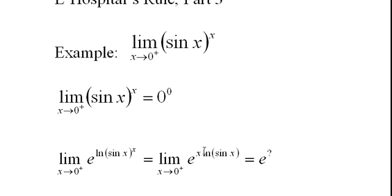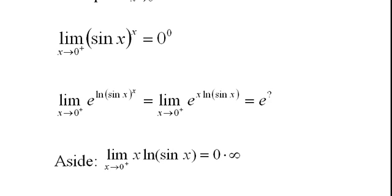Up here, wherever that goes, that's where the original function log of sine of x to the x goes. So we've found the answer, in other words, if we can find out where this exponent goes. So I'm writing e to what power? We don't know yet. We have to do an aside here. And here's the aside. We just have to find out where this goes, and then when we find that number we can put it up here.